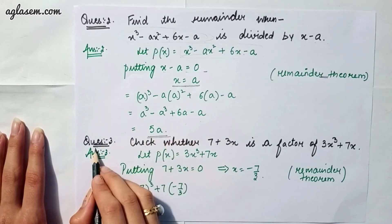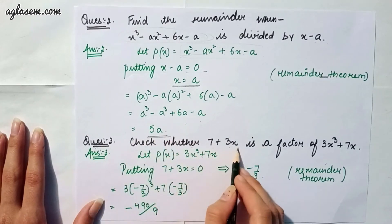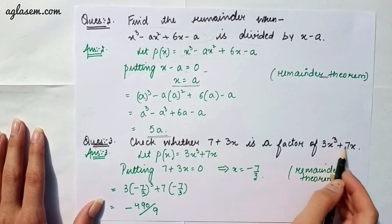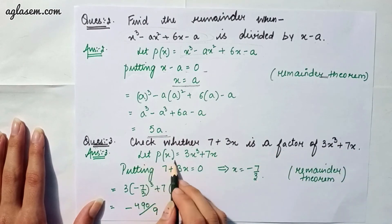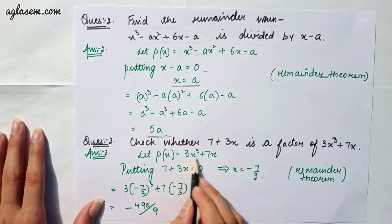Moving to our third question which says, check whether 7 + 3x is a factor of 3x³ + 7x. So, again, we have to let p(x) = 3x³ + 7x. Again, putting equals to 0...